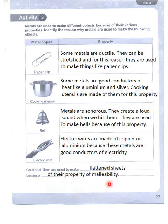Malleability: this property means metals can be beaten flat into thin sheets. Malleability is a property given in your book — you can look it up again there as well.